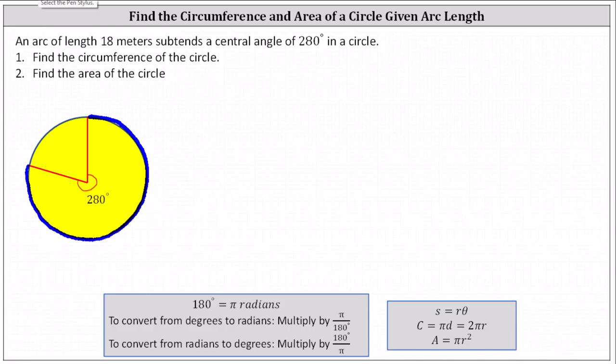We'll first have to find the radius using the arc length formula. Recall the arc length formula is S equals R times theta, where theta must be in radians. Which means for the first step, we need to write 280 degrees in radians.